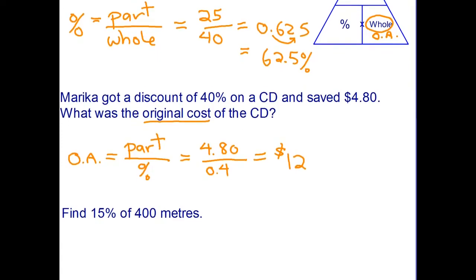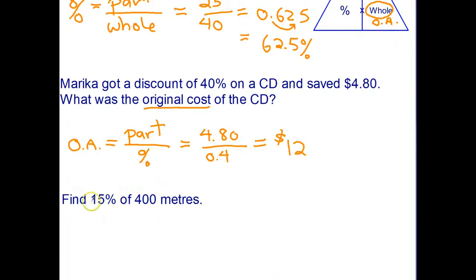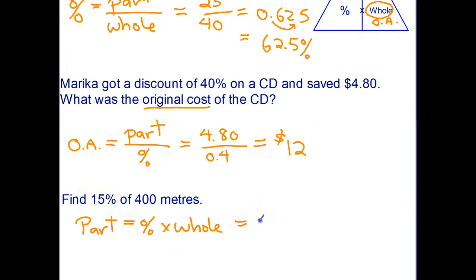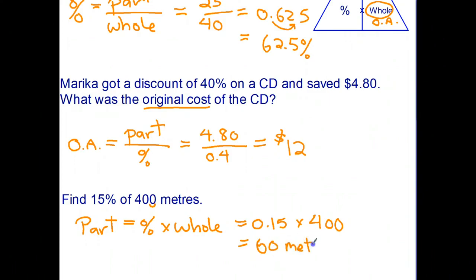For the last question, we know the percent and the whole amount, and we're trying to find the part. 15 percent of 400 meters — we use part equals percent times whole, which is 0.15 times 400. You can reason mentally: 10 percent of 400 is 40, so 15 percent must be 60 meters. It's good practice to do calculations mentally when you can, but still show your working.